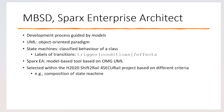The labels of transitions are as shown in the slide. Transitions are triggered by signals, and if certain conditions predicating on the attributes and parameters of the signals are met, then the effect of the transition is executed. The effect generally updates the attributes of the object.